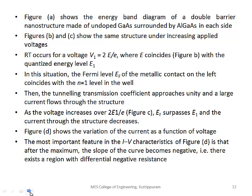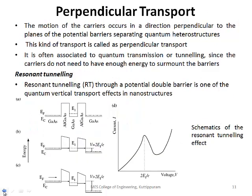As the voltage increases, EF gets lifted and surpasses the energy level. The current through the structure then begins to decrease. This portion exhibits negative differential resistance.